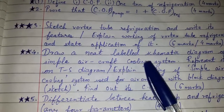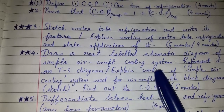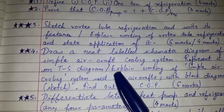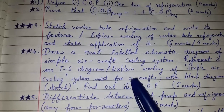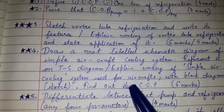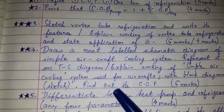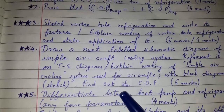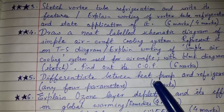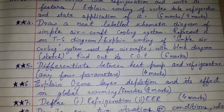Question four: Draw a neat labeled schematic diagram of a simple aircraft cooling system and represent it on a T-S diagram, or explain the working of a simple air cooling system used for aircraft with a block diagram and find its COP. Question five: Differentiate between a heat pump and a refrigerator — any four parameters.